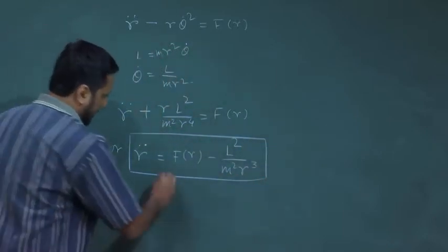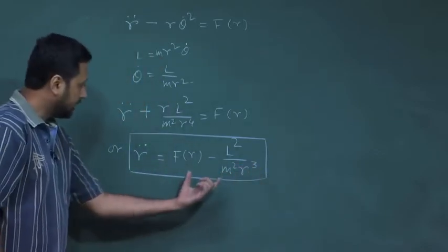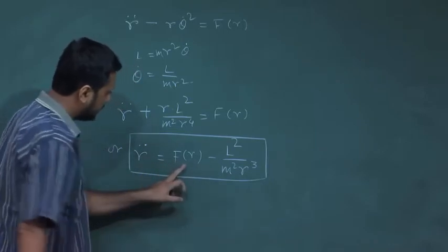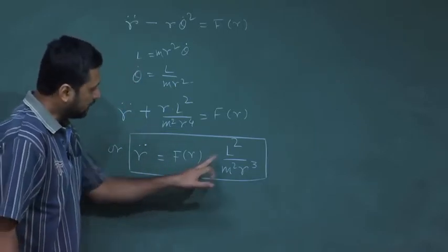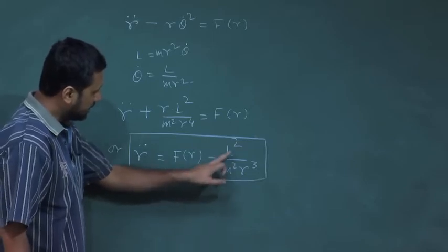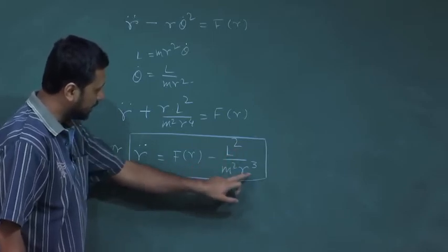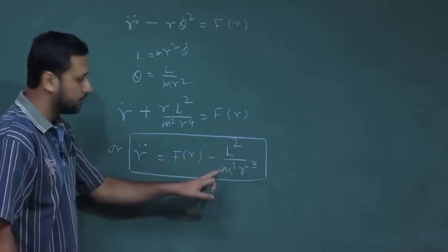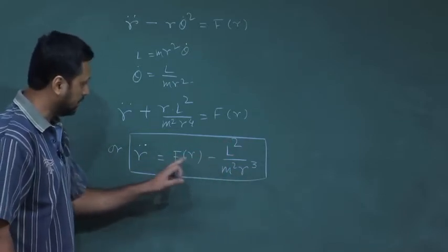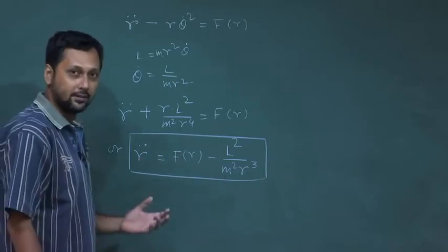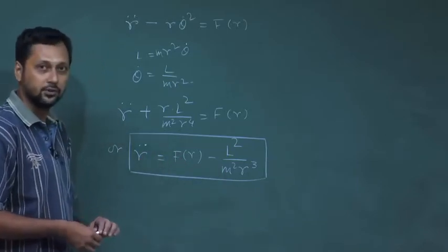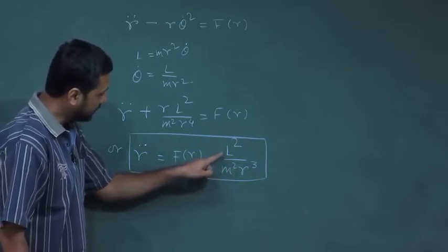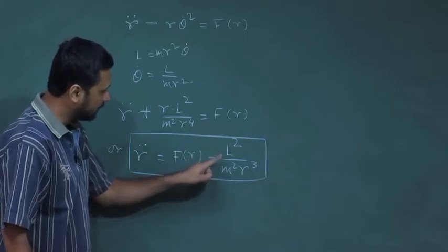On the right-hand side of this equation we have two terms. One is the actual force due to the central orbit, and one is the term L²/(m²r³), which is proportional to distance but is not a real force — it does not have components of real attractive or repulsive forces. Instead it consists of angular momentum and mass.